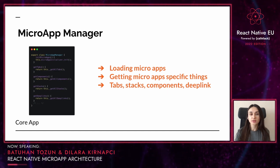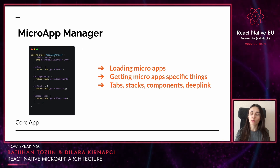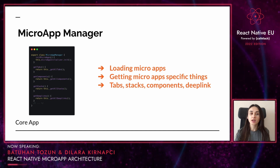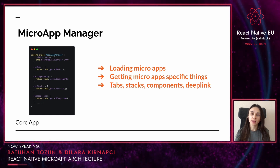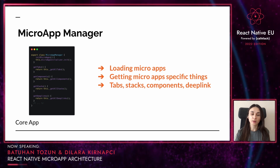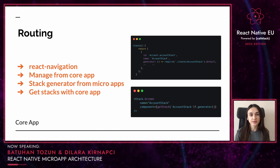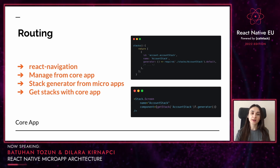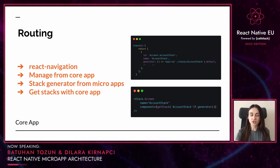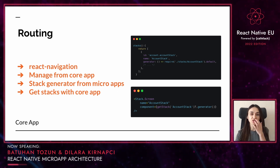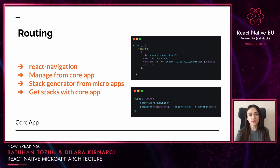The main responsibility of the core app application is loading microapps. A microapp manager class is used for getting microapp-specific things like tabs, components, stacks, deep links, or any other things. You can expand this file according to your microapp needs. These parts are provided from microapps and we can describe this as a contract between the core app and microapp. We use the React Navigation library for routing in the application. The stacks are exported from the microapp contract file and the core app gets the stacks of the microapp. The routing main structure is managed from the core app application, and if microapps want to use navigation, they can do so through the core app application. All the stack structure is completed on a single page in the core app, and microapps can use navigation as in the monolithic.